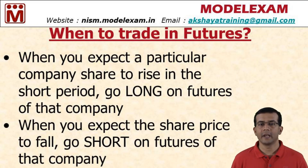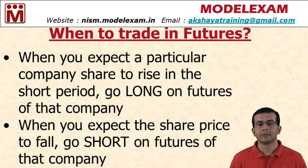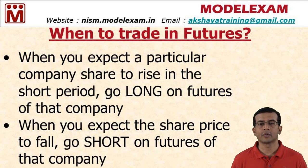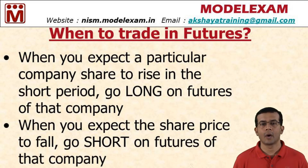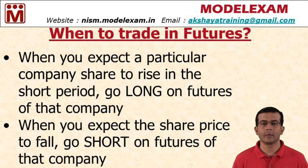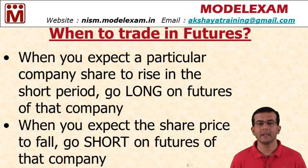We have three contract durations: one month, two months, and three months. If you expect a company's price to rise in the short term — within the next one month — then you go long on the one-month future. If you expect the share price to rise in the next three months, then you buy three-month futures. You can choose the maturity period and buy accordingly.